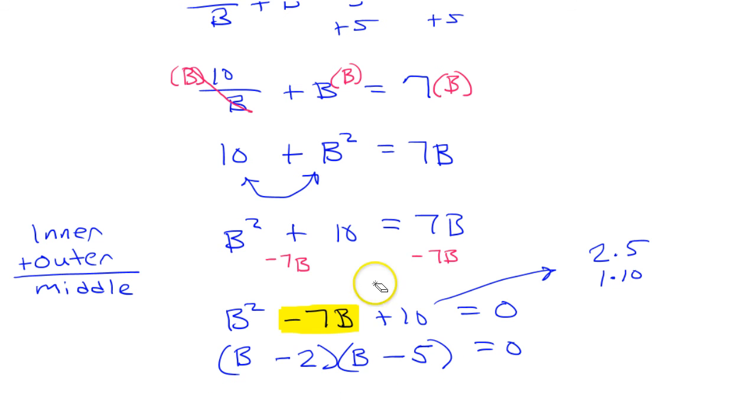So we factored it. So of course, if you have two factors multiplied together equaling 0, you can get your solutions by setting each of these equal to 0. So either b minus 2 equals 0 or b minus 5 will equal 0. So b will either equal 2 or b is going to equal 5. Those are the two solutions to this equation.